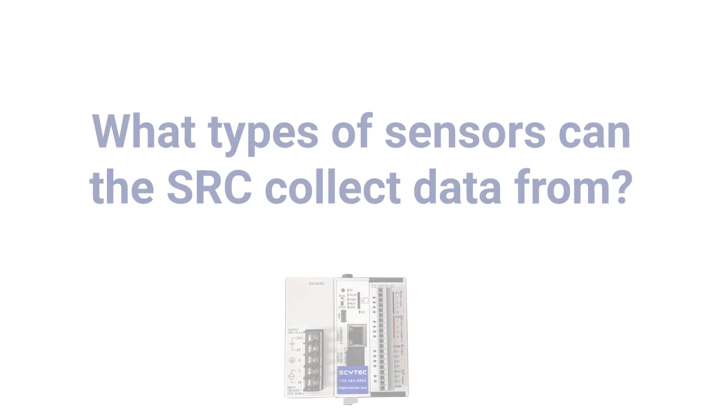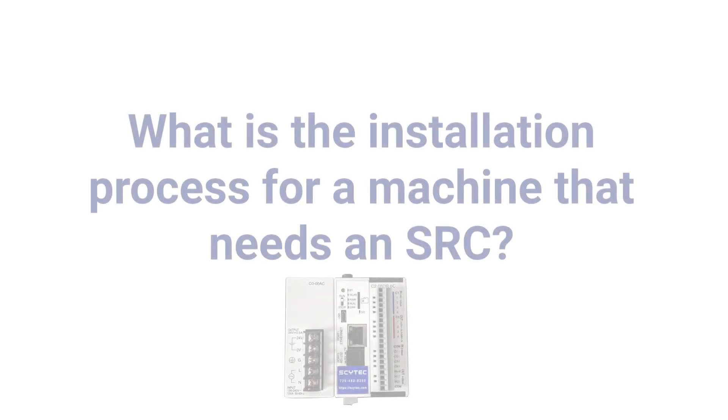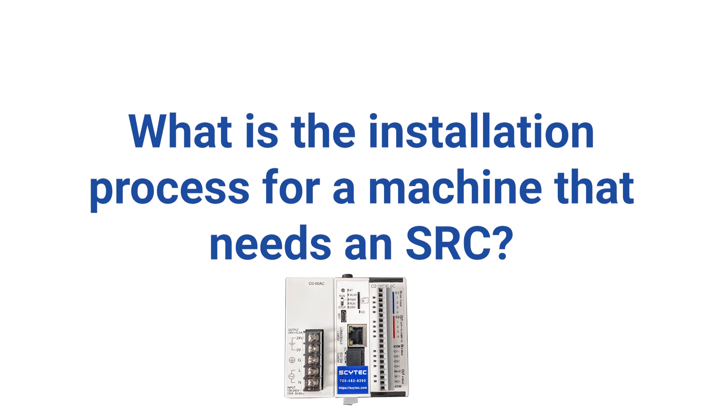Another question: what kind of sensor can the SRC collect data from? The SRC can collect from any sensor that is 4 to 20 milliamps on analog, and also 0 to 10 volts with the extended module. Next: what is the installation process for an older machine? There are two ways — your maintenance team can do it themselves by ensuring power is wired to the SRC through either a 24-volt DC standard outlet or a 120-volt AC outlet. We can also have our resellers, such as Nexus or Shop Floor Automations, come on-site to install it professionally.